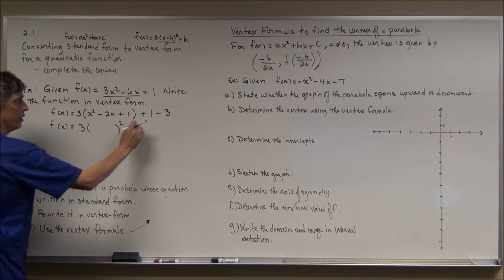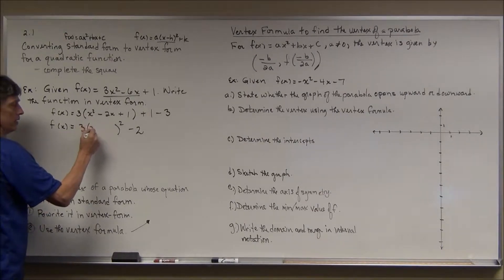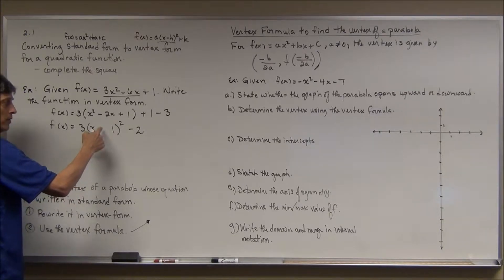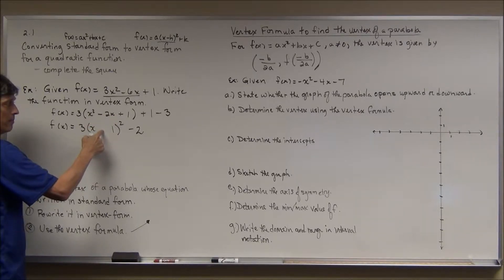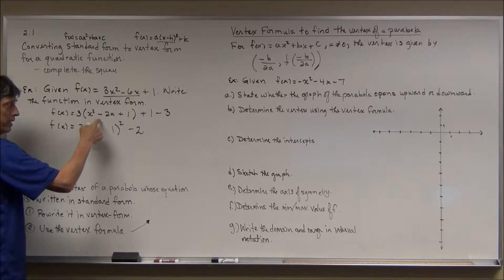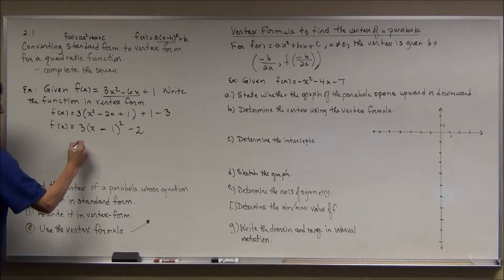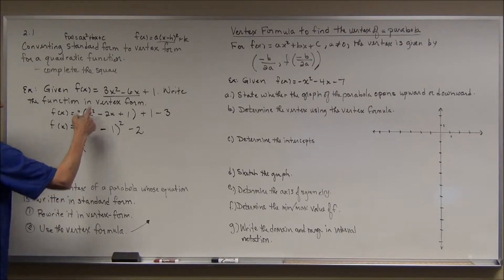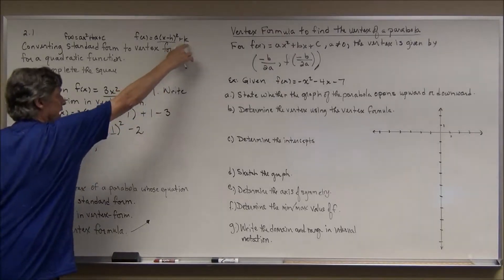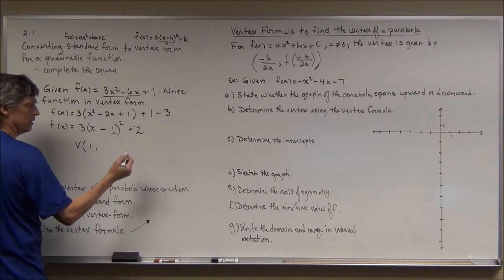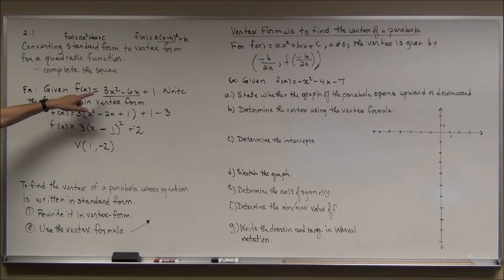Now I rewrite this with my binomial squared. Inside the squared binomial: the first term is x, the last term is 1, and the sign in the middle — to produce -2x as the middle term — must be a minus sign. So I have 3(x - 1)² - 2. That's vertex form. The vertex, even though it wasn't asked for, is (1, -2): h = 1 from (x - h), and k = -2, since subtracting 2 is the same as adding negative 2.